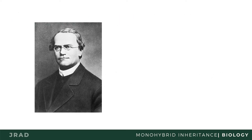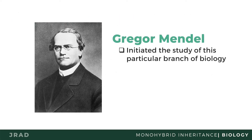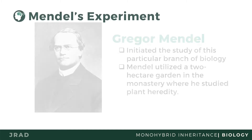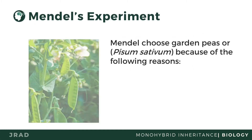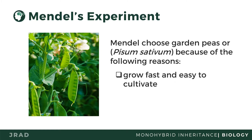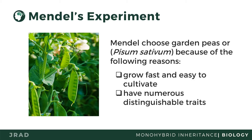Gregor Mendel's experiments involved looking at traits that can be passed on from parents and predicting which of these appears in the offspring. Mendel began his experiment on peas to uncover the different sides of heredity. He chose peas due to their numerous distinguishable traits. Peas also grow fast and are easy to cultivate. His experiment on peas was considered a systematic and large-scale experiment.